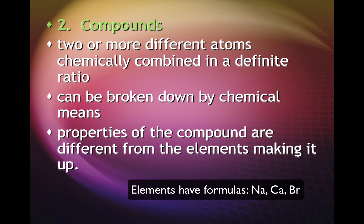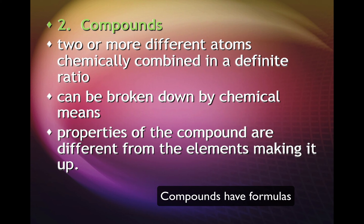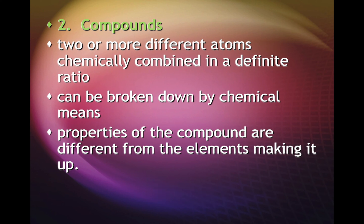Elements have formulas: sodium (Na), calcium (Ca), bromine (Br). Compounds also have formulas: the formula for water is H₂O, and the formula for sodium chloride is NaCl. Substances have a definite formula, whereas mixtures do not have a formula — they may have a recipe, but it's not a chemical formula. For example, your chocolate chip cookies have a recipe, and my chocolate chip cookies have a different recipe.